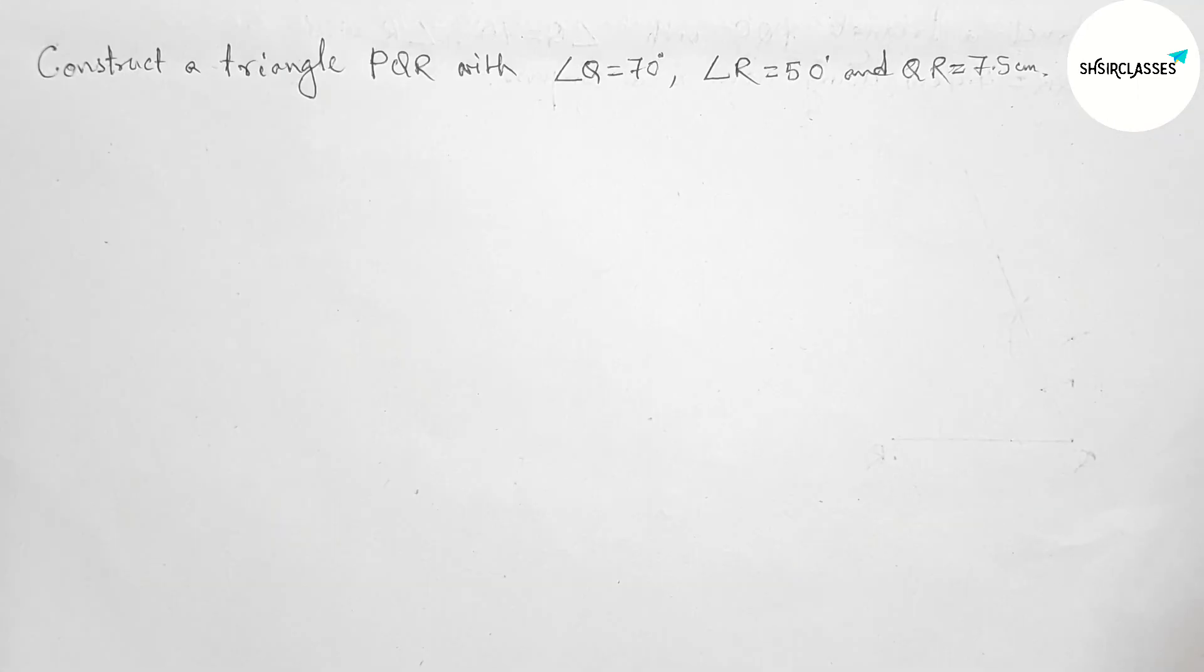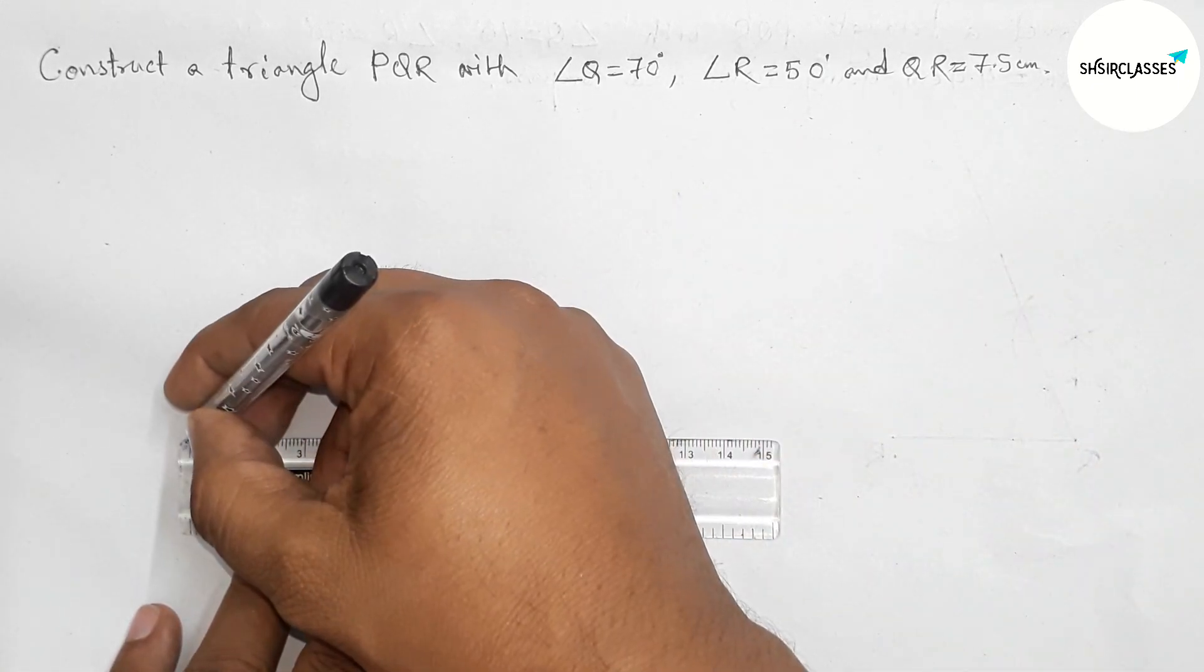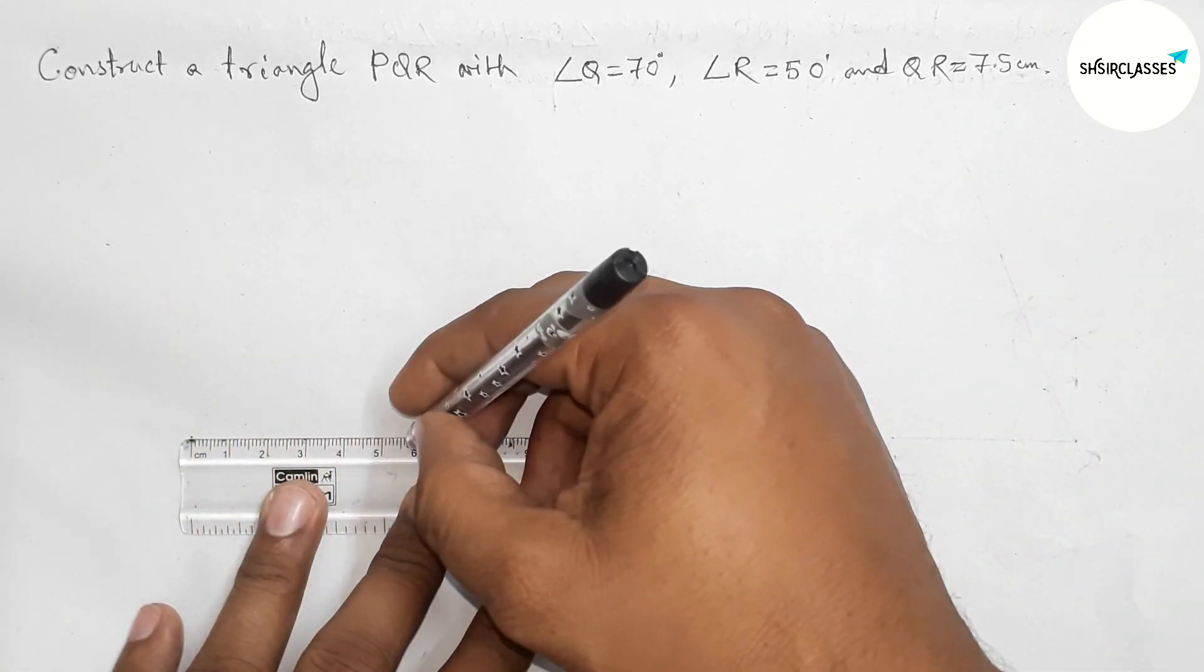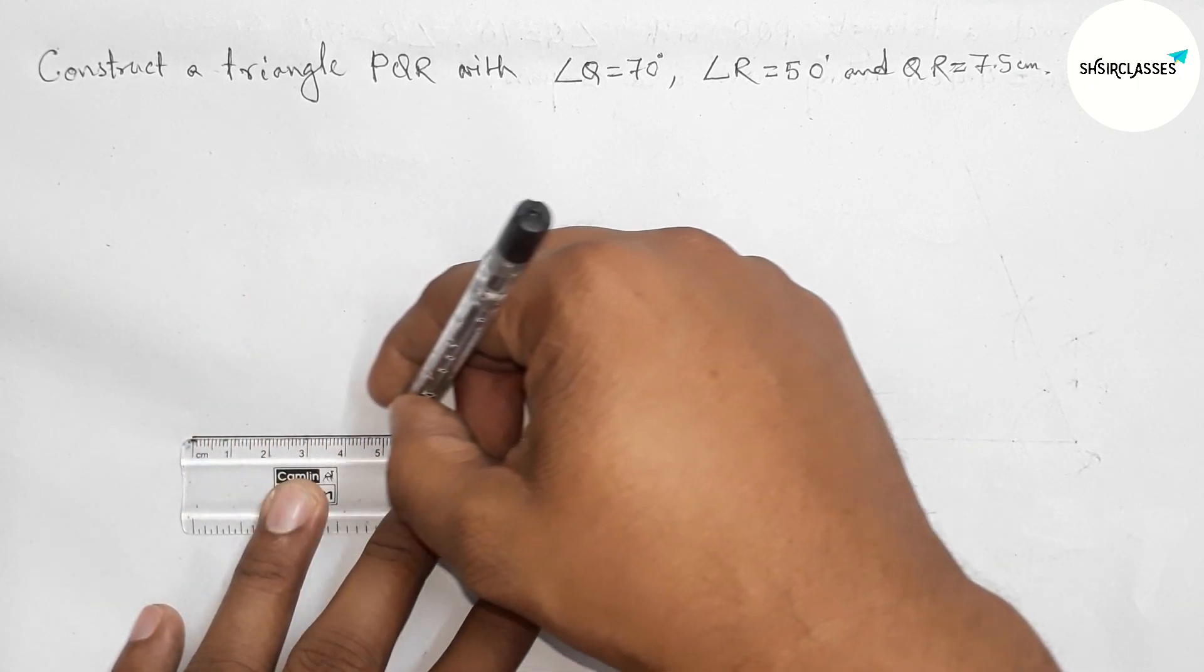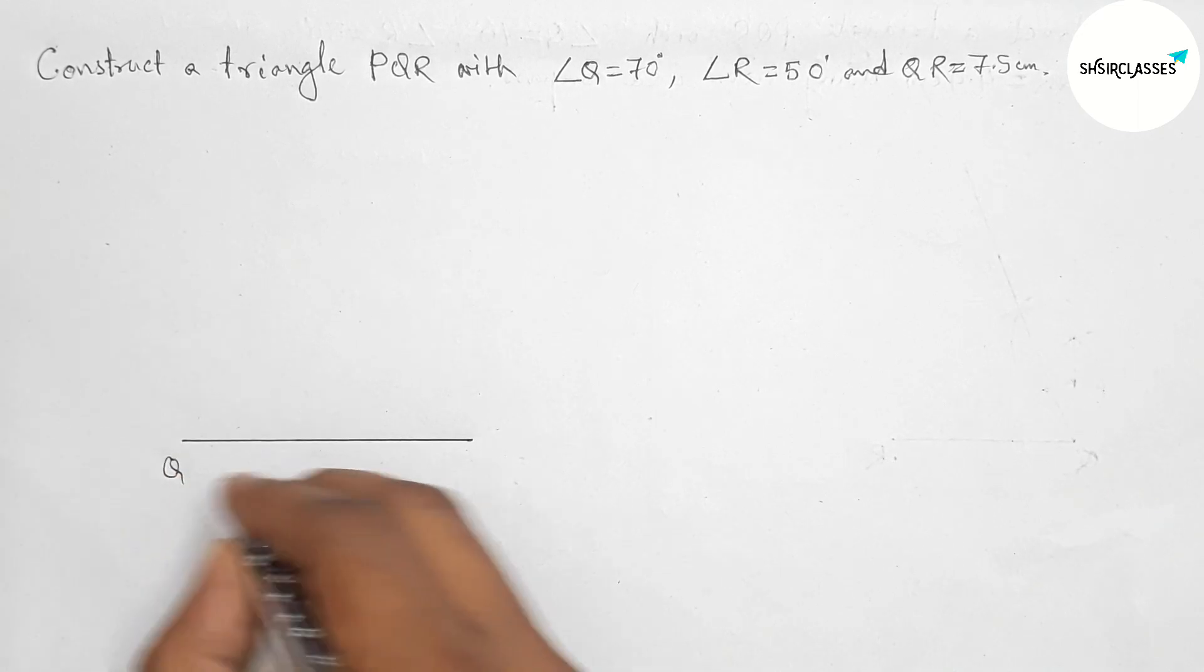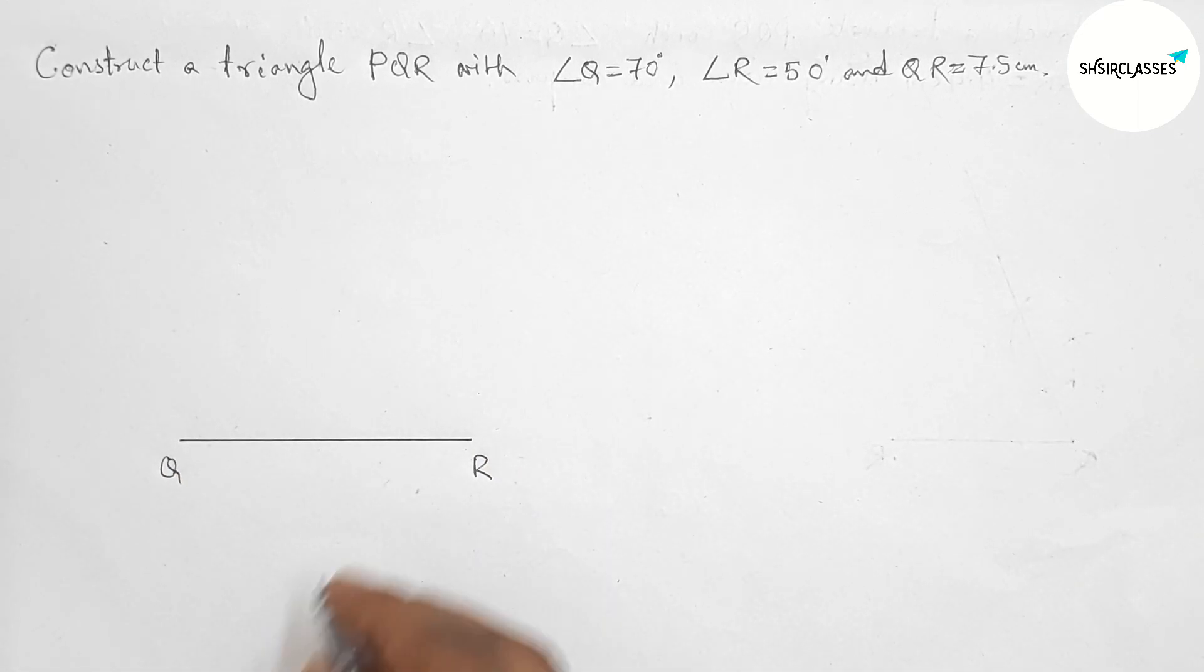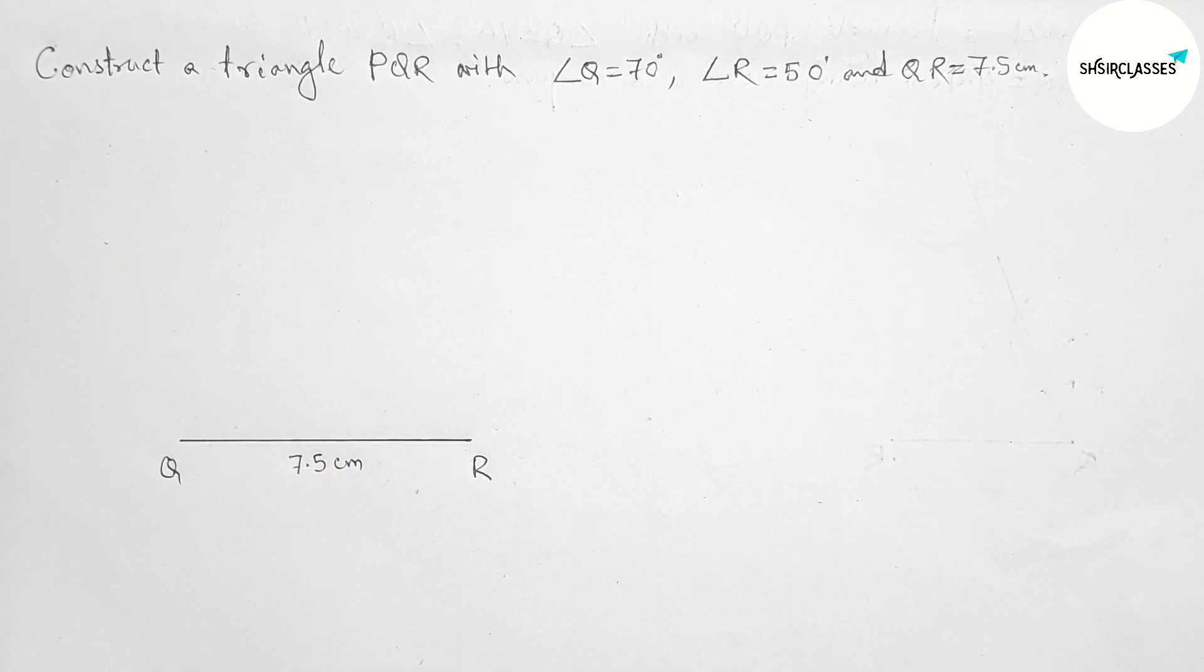First of all, let us draw the given side QR equal to 7.5 centimeters. So here this is a 7.5 centimeter line segment. Now taking points Q and R, this is 7.5 centimeters. Next, we'll draw the 70 degree angle.